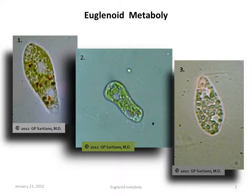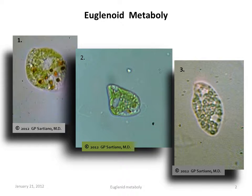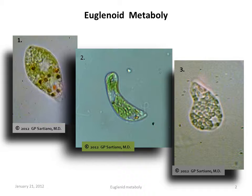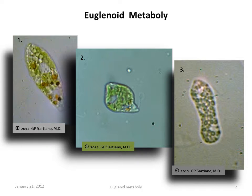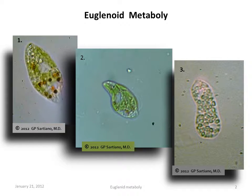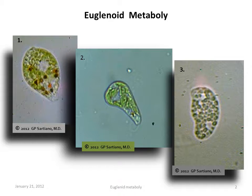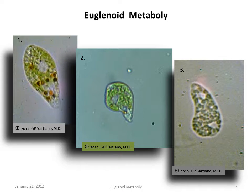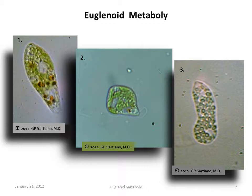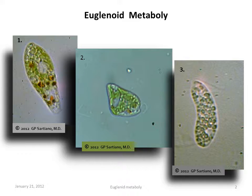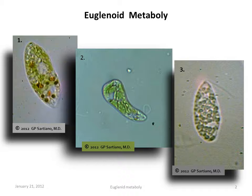Here are three additional examples of metaboly in euglenids. Note that an eye spot can be seen in examples 1 and 2, and the locomotor flagellum can be seen in examples 2 and 3.